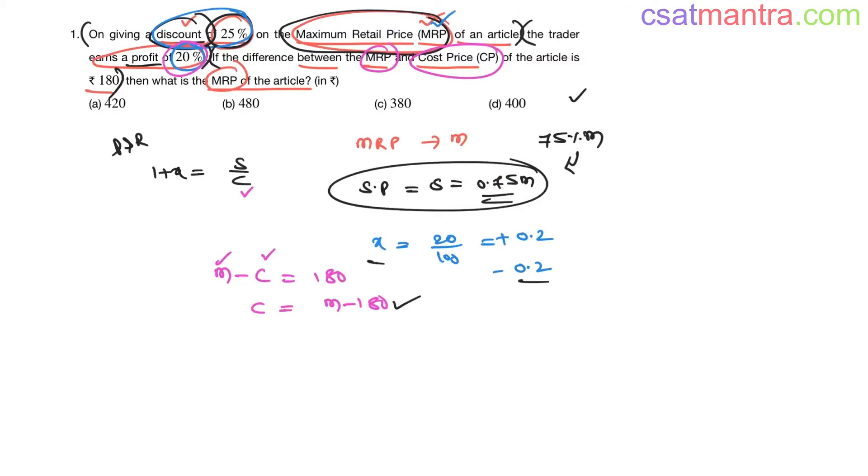Now just substitute all these values in this equation, the only one equation we have for profit and loss problems. 1 + 0.2, that is equal to selling price is 0.75m, cost price is M minus 180. So 1.2 into M minus 180 is equal to 0.75m.